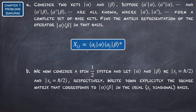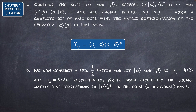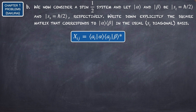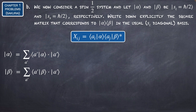This is the result for the matrix element X_ij. Now we consider a spin-half system and let alpha be the state |S_z = ℏ/2⟩ and beta be |S_x = ℏ/2⟩ respectively. We will write down explicitly the square matrix corresponding to |alpha⟩⟨beta| in the usual S_z diagonal basis.